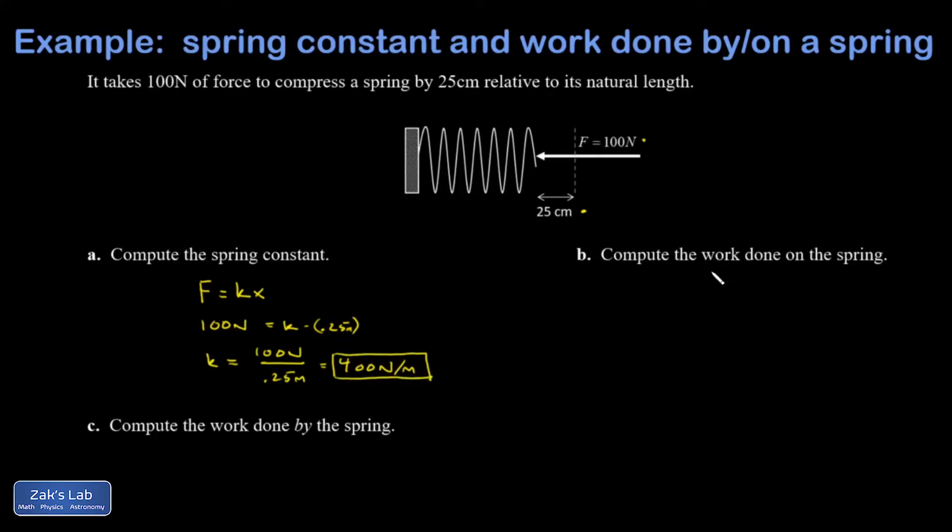Then I get into the work done on the spring versus by the spring. Whichever way you do it, the magnitude is going to be given by this formula: one-half kx squared. It's just a question of asking which one should be positive and which one should be negative.